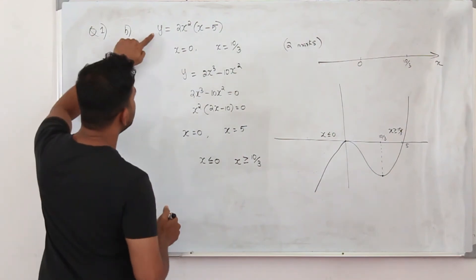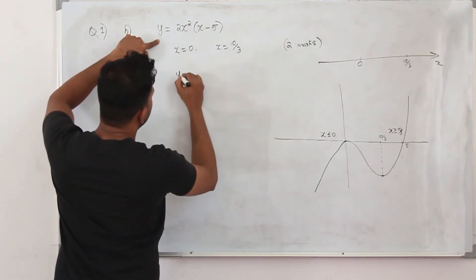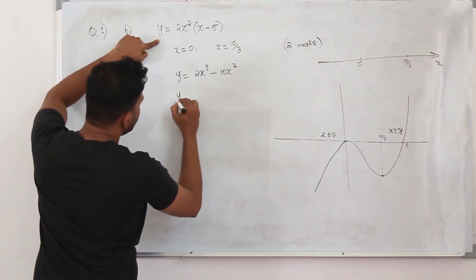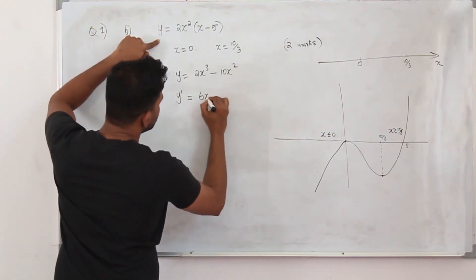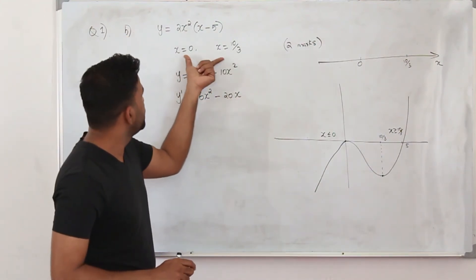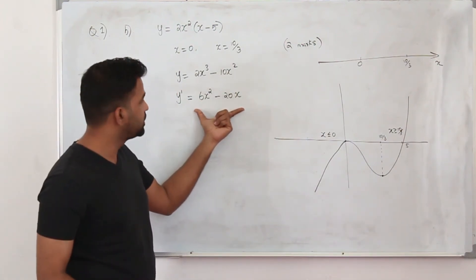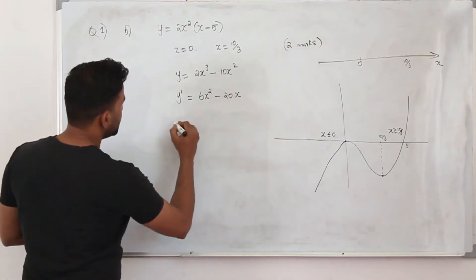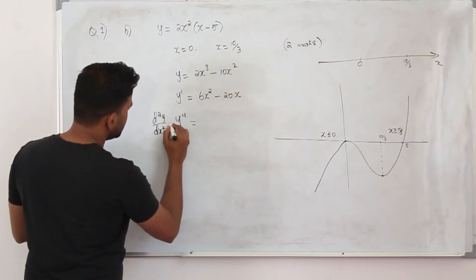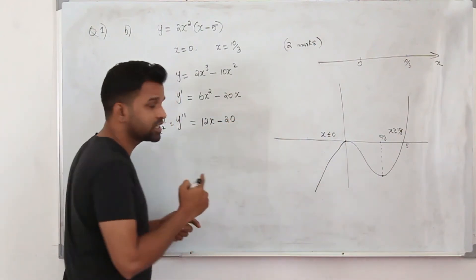Take the first derivative again. After expanding, the first derivative is y' equals 6x squared minus 20x. Differentiate again to get the second derivative: y'' equals d²y/dx² equals 12x minus 20. That's your second derivative.